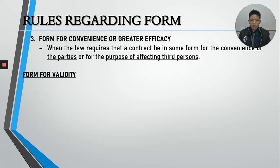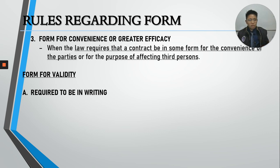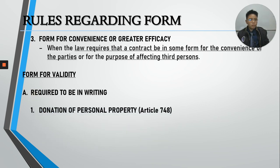Form for validity is required in the following instances. Some instruments are required to be in writing to be valid. Some instruments are required to be in writing and also in a public instrument or notarized for validity. The first group only requires a written instrument — notarization is not required. The second group must not only be in writing but must also be in a public instrument or be notarized. The first example is donations of personal property.